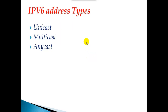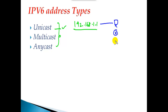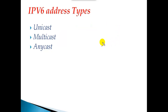In IPv6 we also have categories, but we don't have any classes. We just have three categories of addresses. The first is unicast, which is a normal IPv6 address that can be assigned to any device in the network — a computer, a router, or any device like a firewall. Any address you can assign to a networking device is called a unicast address.